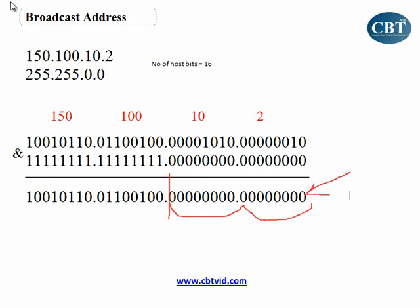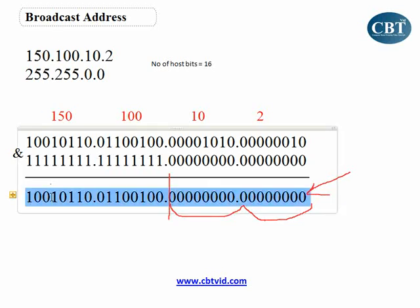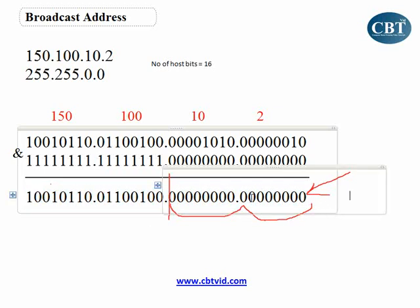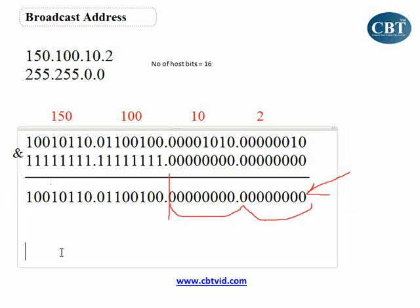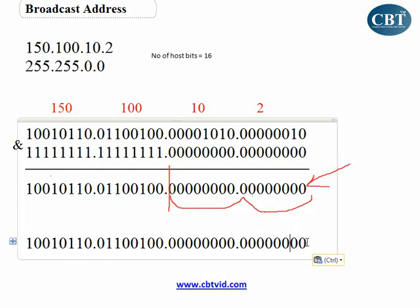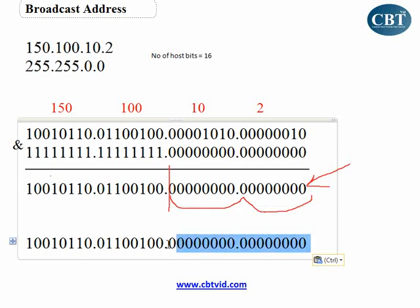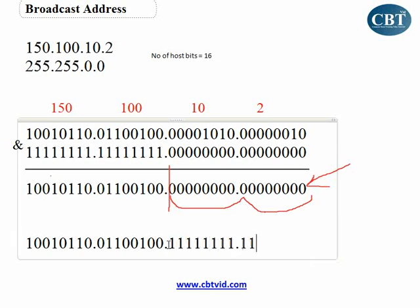Let me do that. We copy this network address and paste it here. I have to count 16 zeros — here are 8 and here are 8, up to this part. I convert them to ones: 1, 2, 3, 4, 5, 6, 7, 8 — dot — 1, 2, 3, 4, 5, 6, 7, 8. Here are 16 zeros. I convert them to ones.